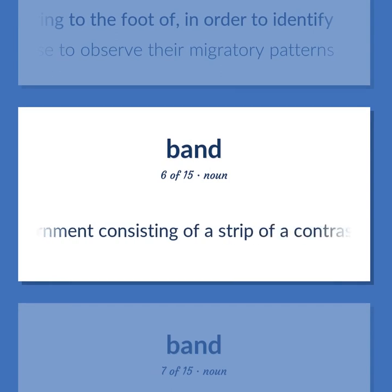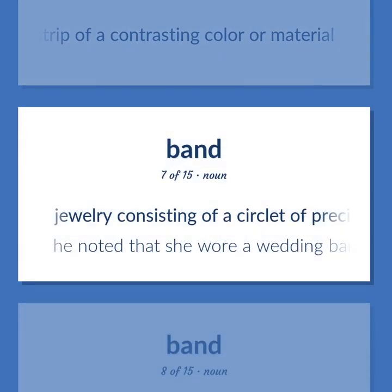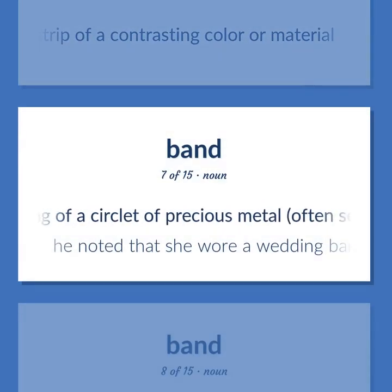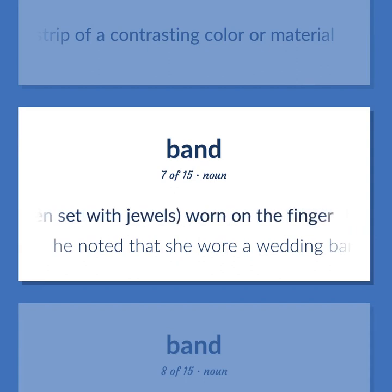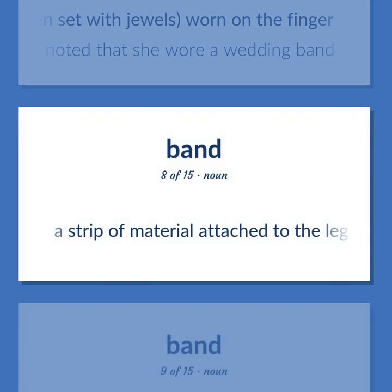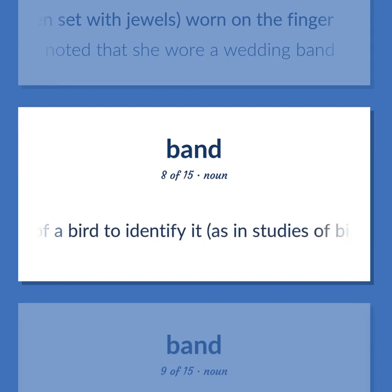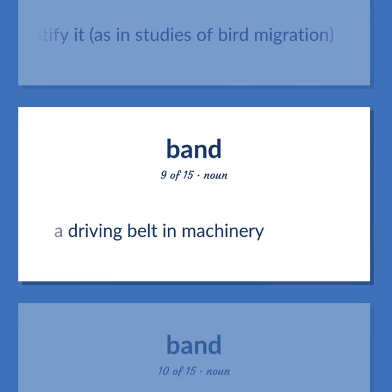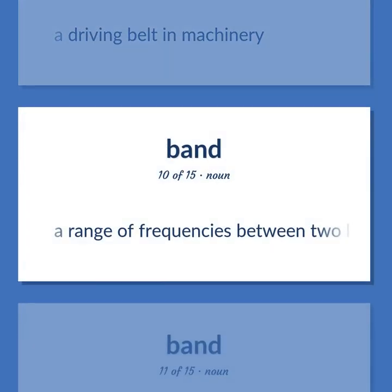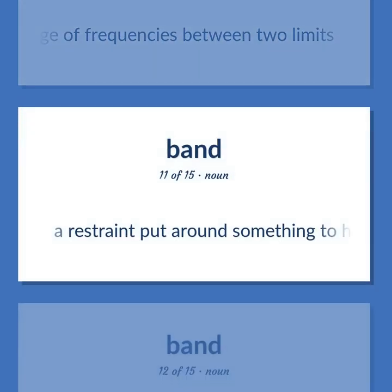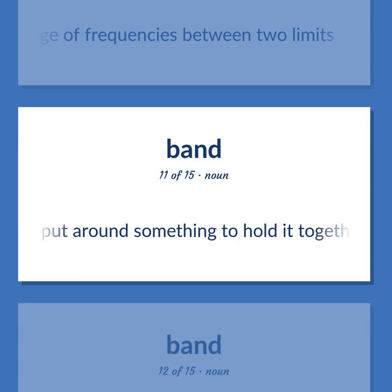An adornment consisting of a strip of a contrasting color or material. Jewelry consisting of a circlet of precious metal, often set with jewels, worn on the finger. He noted that she wore a wedding band. A strip of material attached to the leg of a bird to identify it, as in studies of bird migration. A driving belt in machinery. A range of frequencies between two limits.